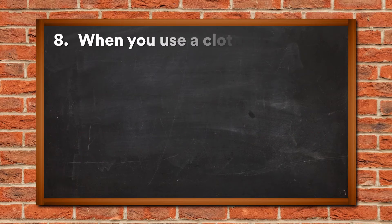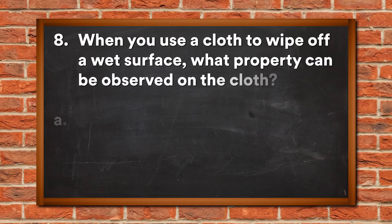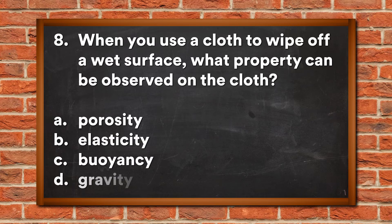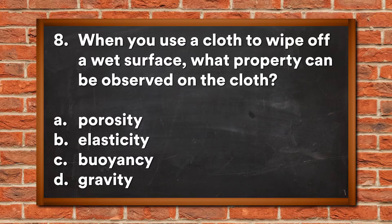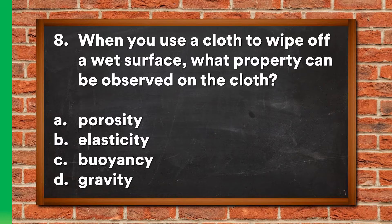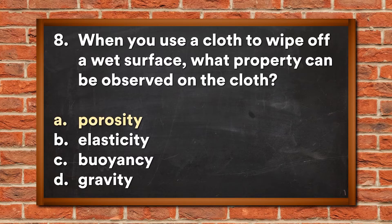Question 8: When you use a cloth to wipe off a wet surface, what property can be observed on the cloth? A. Porosity, B. Elasticity, C. Buoyancy, D. Gravity. The answer is A, Porosity.